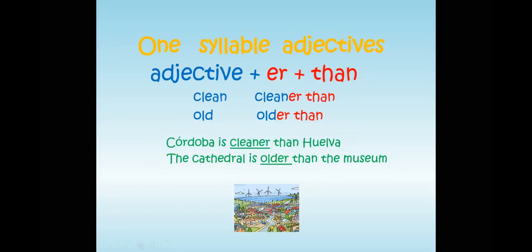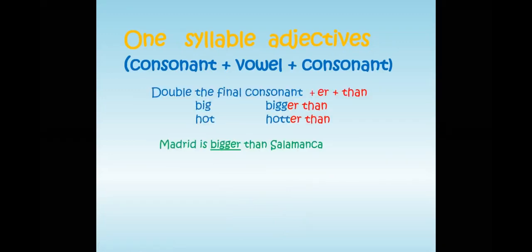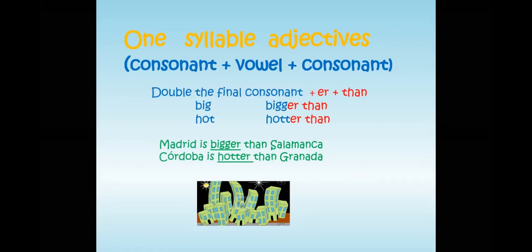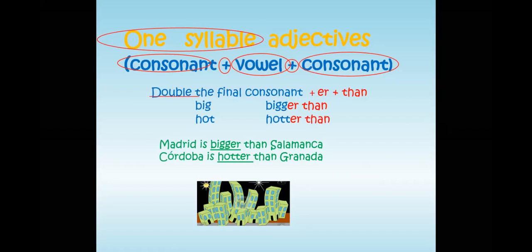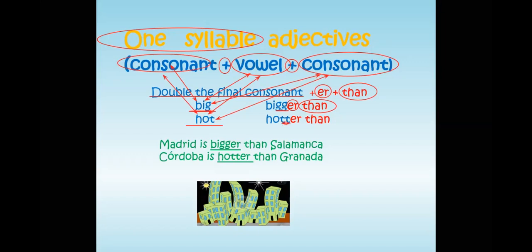Next, we have another one-syllable case, but with a difference. When the adjective has a consonant-vowel-consonant pattern, you double the final consonant. For example: 'big' — consonant, vowel, consonant — you repeat the final letter G and add -ER. Same with 'hot': consonant, vowel, consonant — you repeat the final consonant.